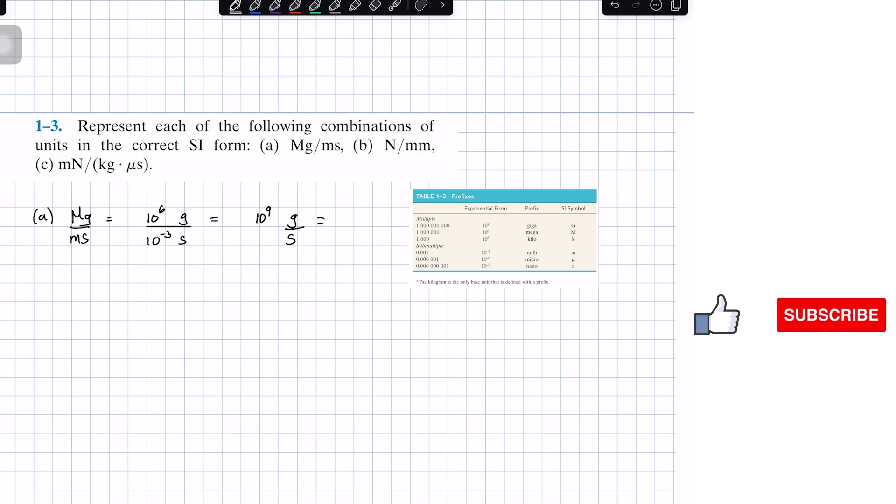If we go back into our prefix, 10 to the 9 is giga, so we're going to write it as gigagram per second. And just like that, we found the solution for problem A.